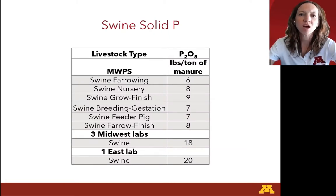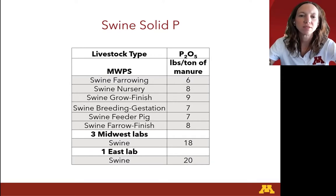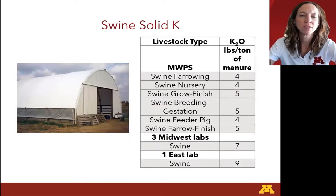For swine solid phosphorus, Midwest Plant Service ranged between 6 and 9 pounds of P2O5 per ton of manure. Our three Midwestern labs had a median of 18 and our one Eastern U.S. lab had 20 — quite a bit higher than the published values. For swine solid potassium, Midwest Plant Service had between 4 and 5, and our medians from the Midwest and Eastern U.S. labs were 7 and 9 — both trending higher in potassium.